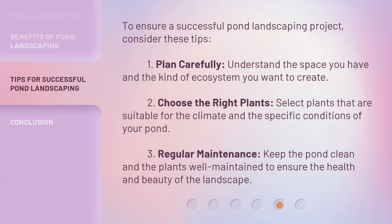To ensure a successful pond landscaping project, consider these tips. First, plan carefully: understand the space you have and the kind of ecosystem you want to create. Second, choose the right plants: select plants that are suitable for the climate and the specific conditions of your pond. Third, regular maintenance: keep the pond clean and the plants well-maintained to ensure the health and beauty of the landscape.